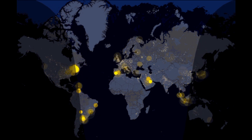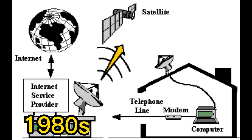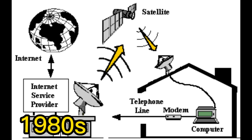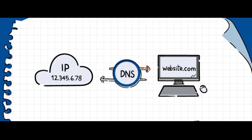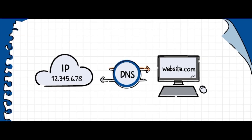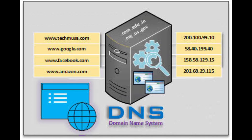The 1980s saw the rise of the first commercial Internet service providers, ISPs, and the introduction of the domain name system, DNS, which made it easier for users to navigate the Internet by using domain names instead of IP addresses.